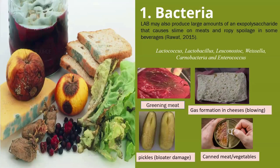First, we talk about bacteria — especially lactic acid bacteria (LAB). LAB encompasses Lactococcus, Lactobacillus, Leuconostoc, Weissella, and Carnobacterium species, as well as Enterococcus, which are frequently associated with spoilage. Although LAB are generally beneficial for food and used for the fermentation of a variety of foods and raw materials — contributing to flavor, texture, and shelf life — some species can play a significant role in food spoilage. Undesirable changes caused by LAB include greening of meat and gas formation in cheeses, pickles, and canned or packaged meat and vegetables.